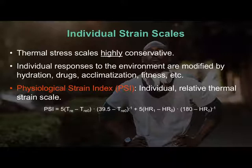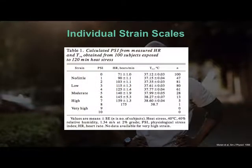If your core temperature is 39 or above, you end up scoring five points for that half. If heart rate is 180 or above, you score five points for the second half. The PSI — physiological strain index — is at a maximum of 10. And we can see what that looks like in this example.